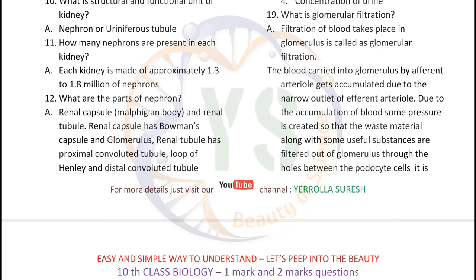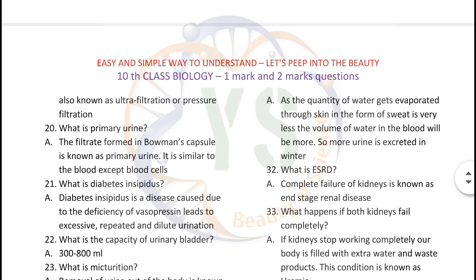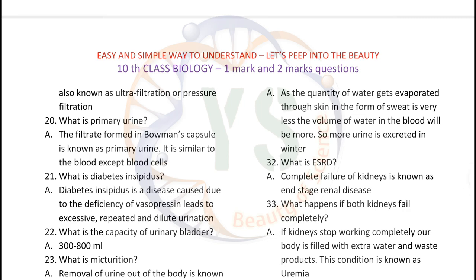What is glomerular filtration? Filtration of blood that takes place in the glomerulus is called glomerular filtration. The blood carried into the glomerulus by the afferent arteriole gets accumulated due to the narrow outlet of the efferent arteriole. Due to the accumulation of blood, some pressure is created so that waste material along with some useful substances are filtered out of the glomerulus through the holes between the podocyte cells. This process is also known as ultrafiltration or pressure filtration.